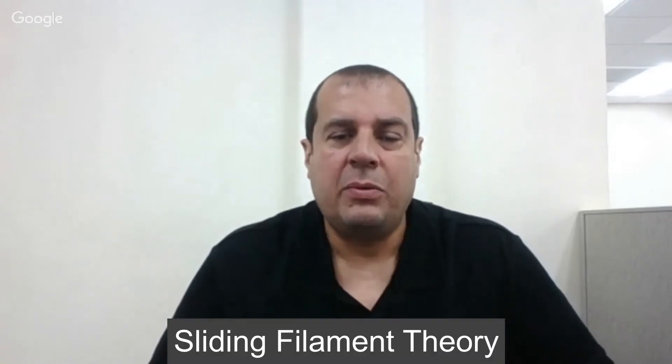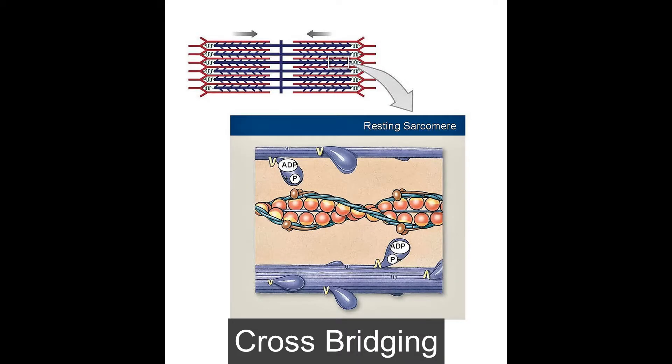On this video, I want to go over the sliding filament theory, which is basically the sliding between the actin and the myosin strands on a sarcomere. Another component is called cross-bridging, which is the myosin heads attaching to the active site of the actin and causing contraction — or the shortening of the length of the sarcomere.